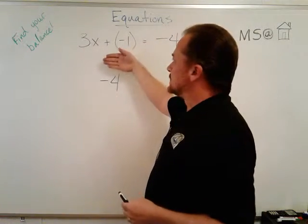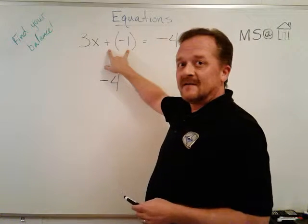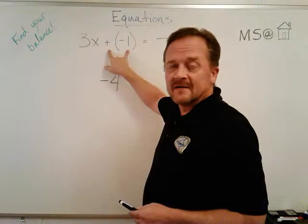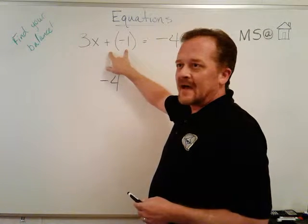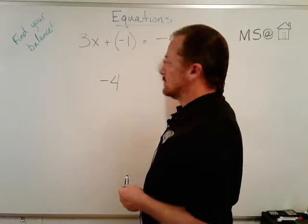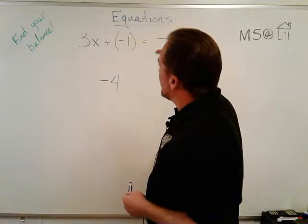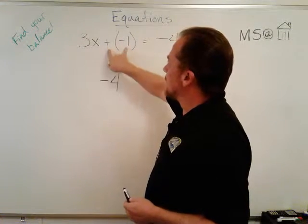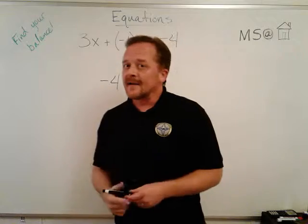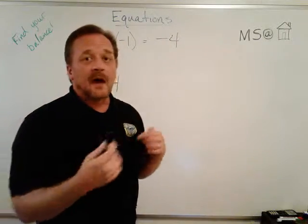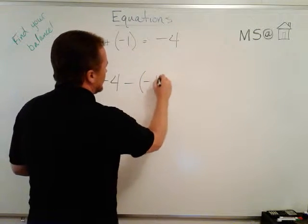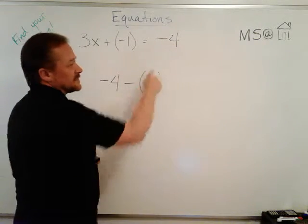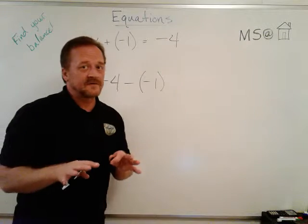So we're going to look at this and we're going to subtract negative one. This was the first step in the backtrack. We started with what he ended with, and now we're moving this way to adding negative one, but we're not going to add negative one. We're going to do the opposite, the inverse, and we're going to subtract negative one from the result.